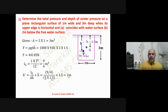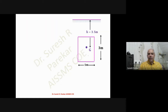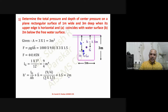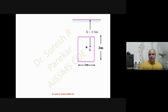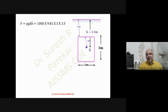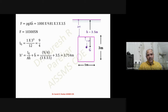For the second case, the surface is two meters below the water surface. So we have that distance as two meters, and the centroid distance from water surface, h̄, is 2 + 1.5 = 3.5 meters. The remaining calculations are the same — I_G remains unchanged, h̄ changes — and therefore we get h* = 3.714 meters from the water surface.